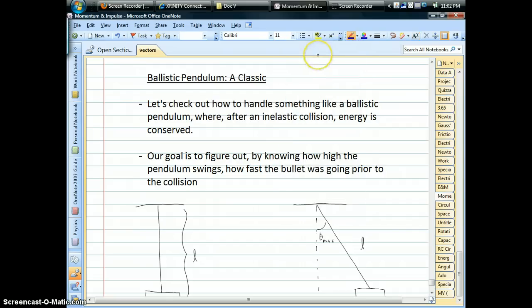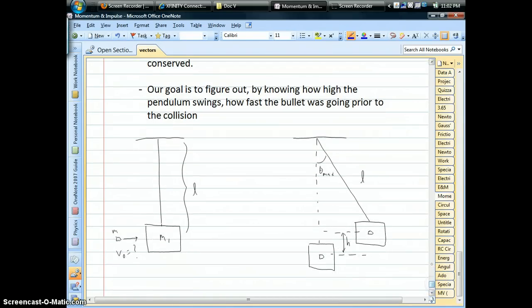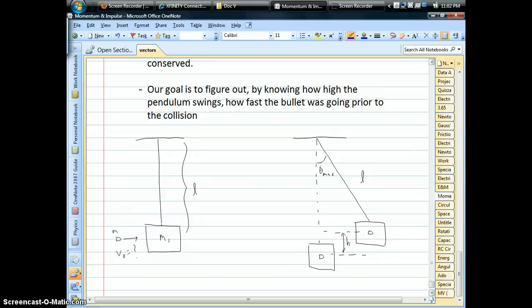I'm just going to change colors here. And yeah, it's a relatively simple idea where you shoot something into a block that's hanging from a rope. The bullet sticks, so we have an inelastic collision, and then it starts to spin. Energy and momentum are transferred, and then it becomes just a normal pendulum swinging back and forth.